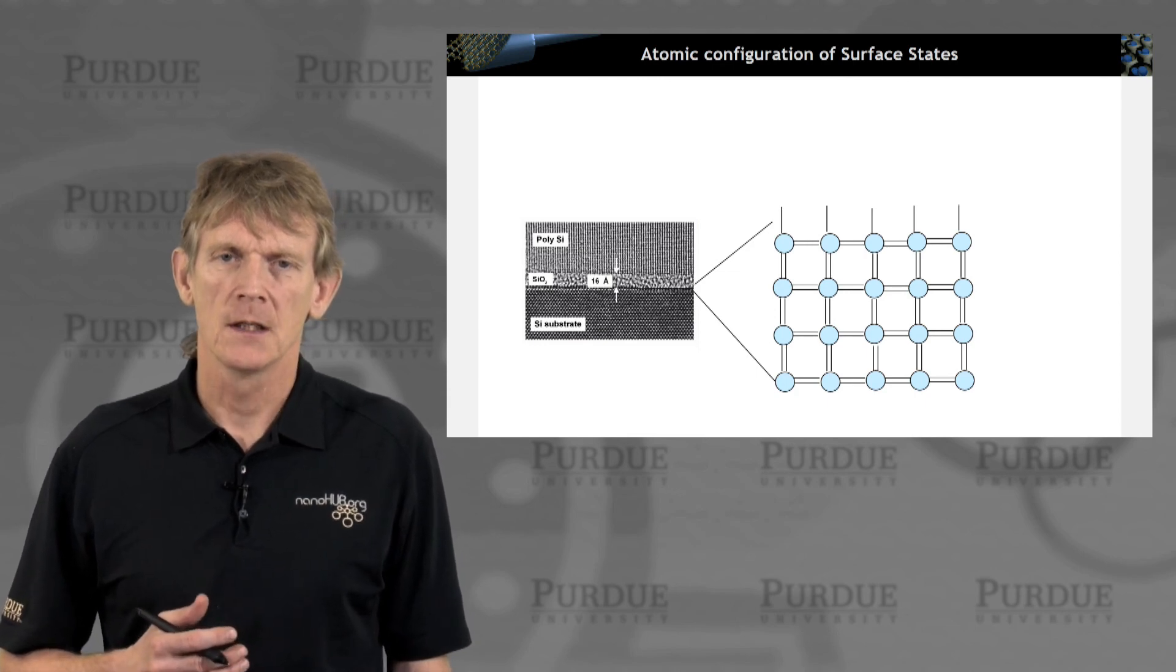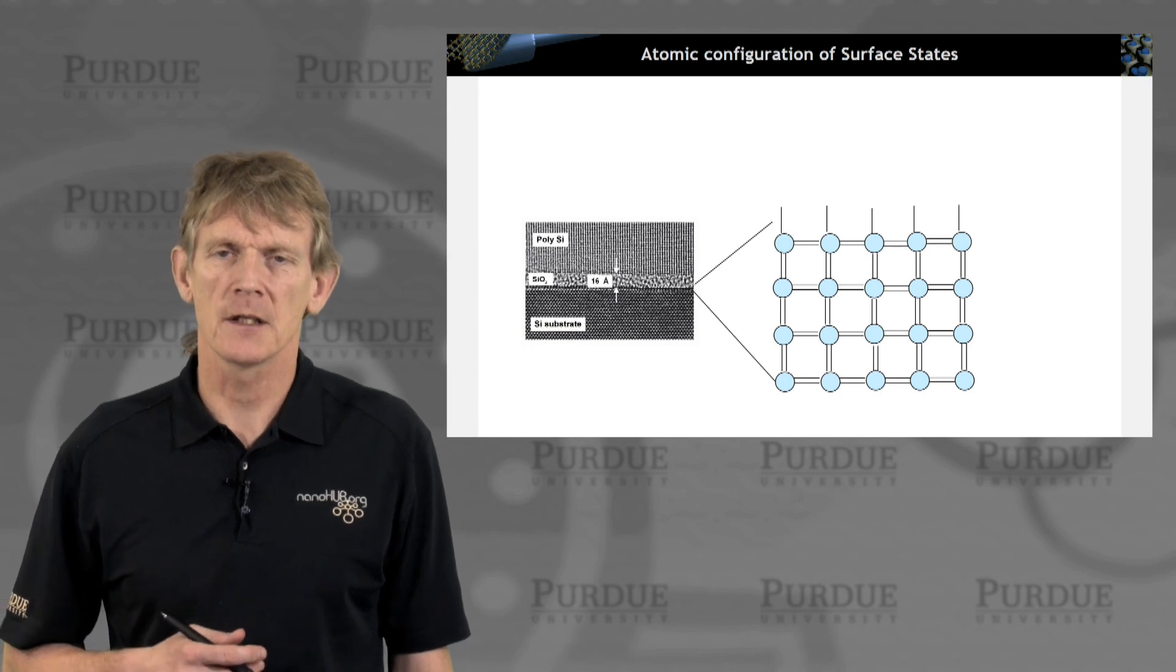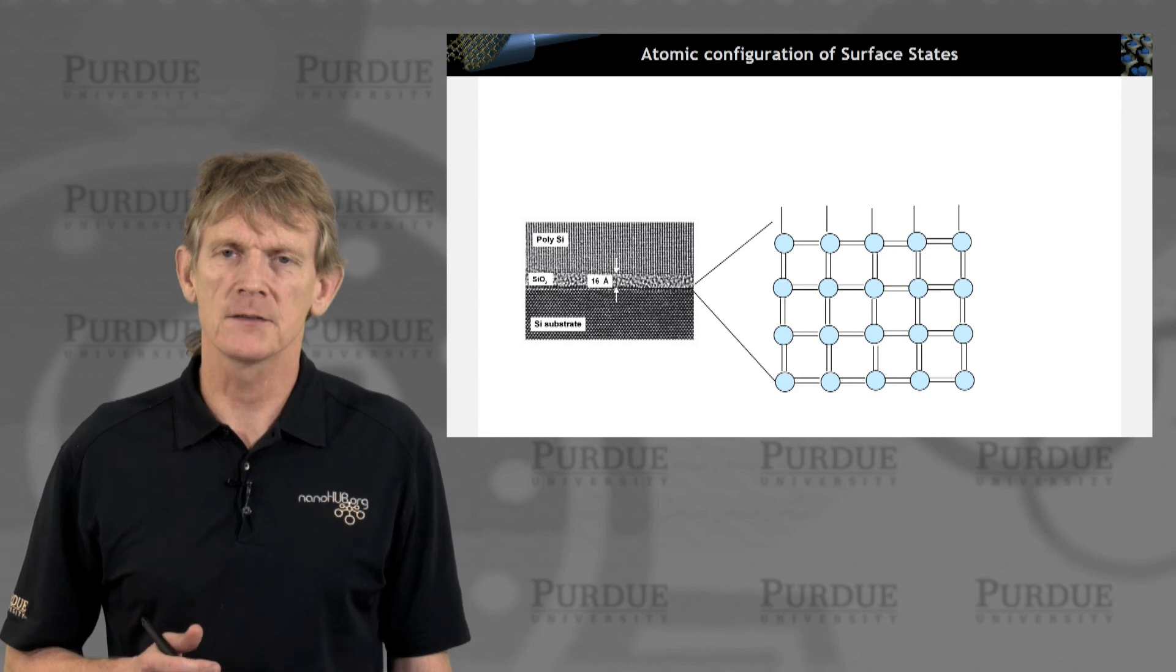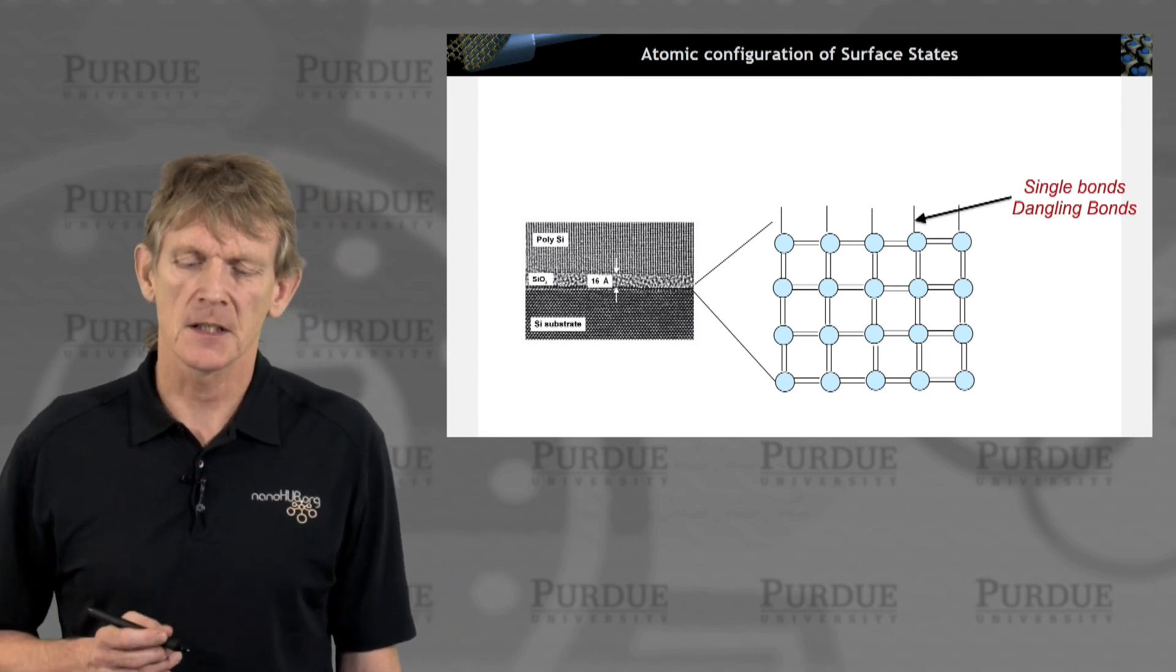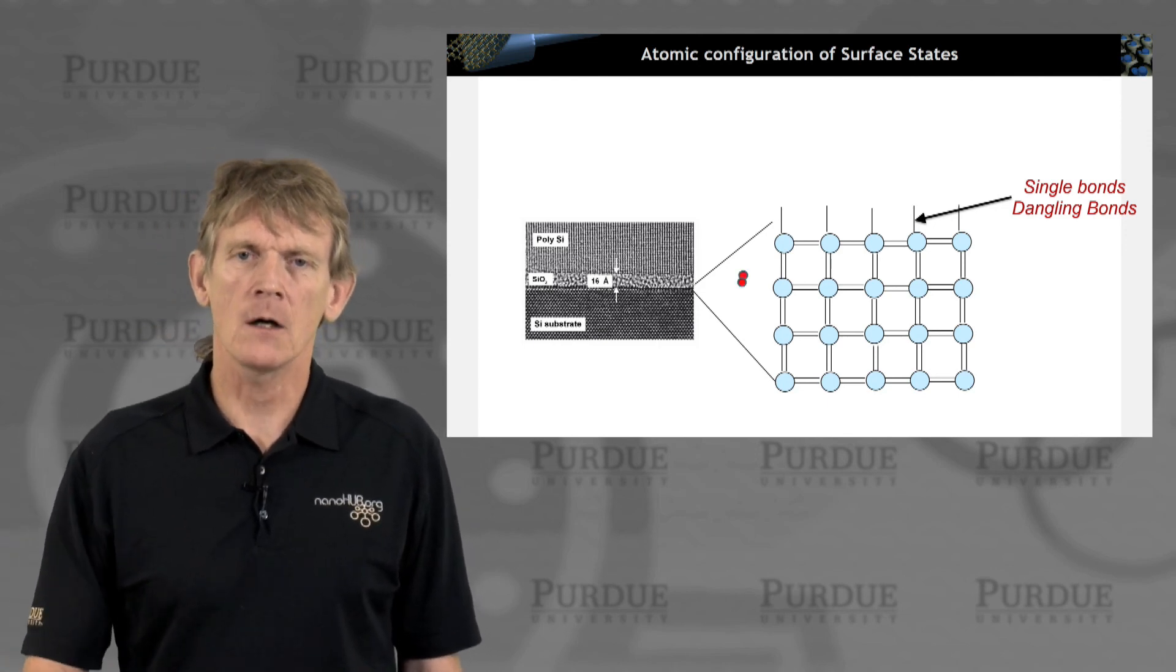What happens if you do not do anything particular to the surface of a semiconductor, you will have these bonds that are not quite satisfied. You have single dangling bonds in the structure like this.